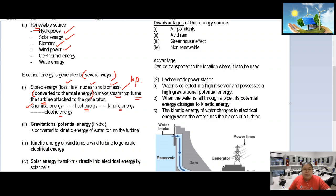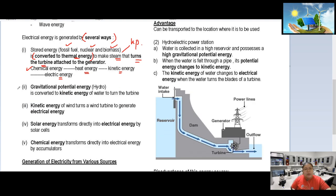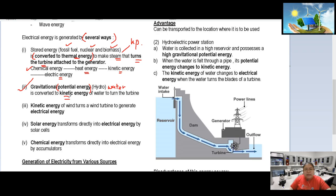For hydro — a renewable energy source — it uses gravitational potential energy. Water is stored at a high location, giving it gravitational potential energy. When released, it comes down with high velocity, converting potential energy to kinetic energy, which then turns the turbine.